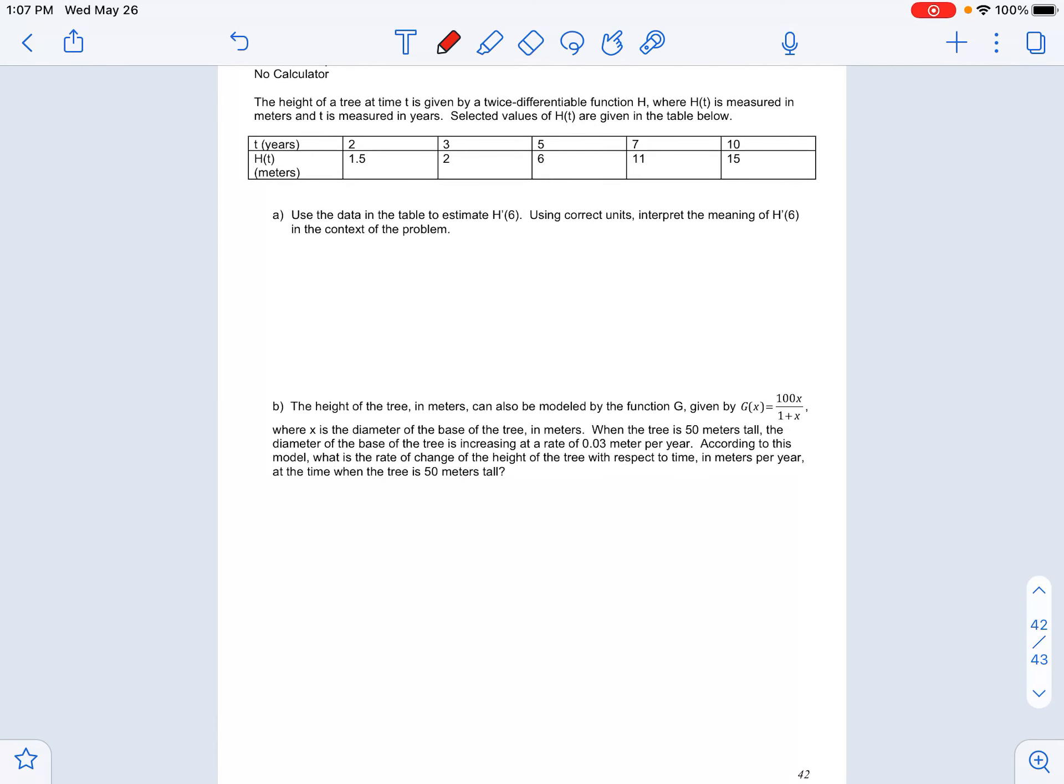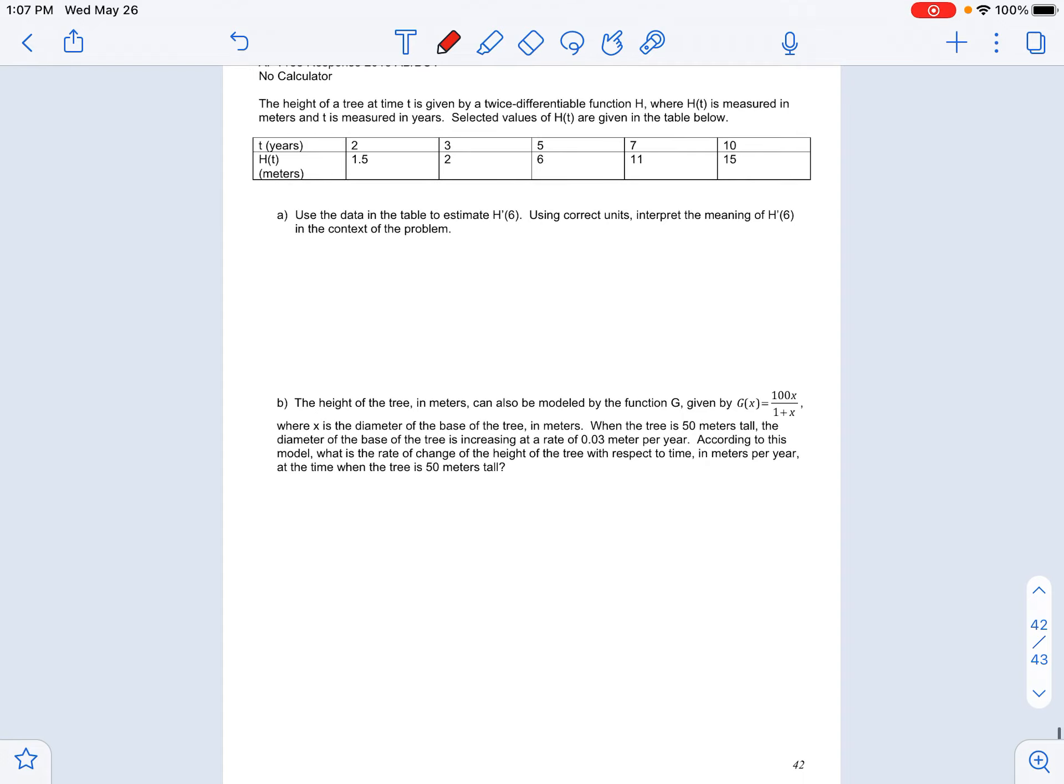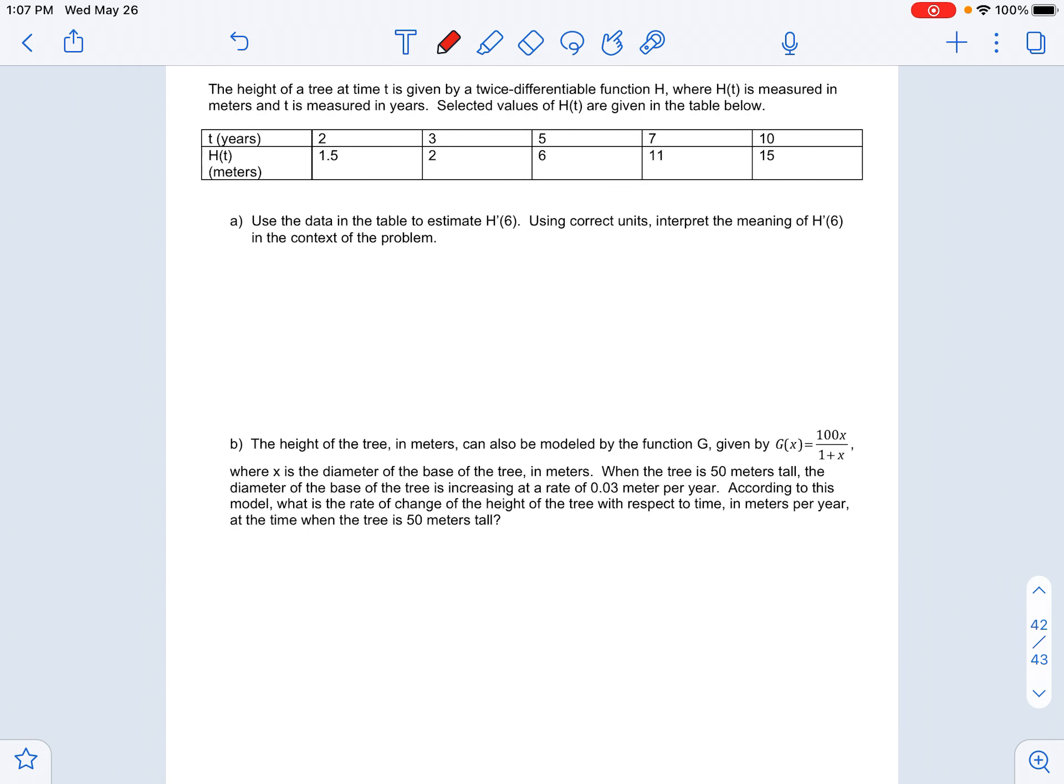This is a tabular problem, so they're giving us information in a table format, and it's giving us the height of a tree at particular moments in time. So after two years, the height of the tree is 1.5 meters, and it's telling us that the height is a twice-differentiable function. All that means is that the second derivative exists, which also means the first derivative exists, which really also means that h is a continuous function. It says h is measured in meters, t is in years.